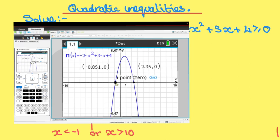Now let's write down the solutions to our inequality. Well, it is x is less than or equal to, or lies between 2.35 and -0.851.